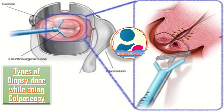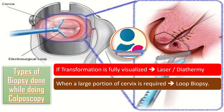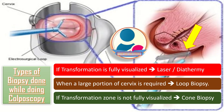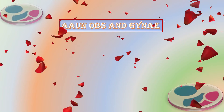If the transformation zone is fully visualized, biopsy of the worst atypical epithelium may be undertaken with an excisional method such as laser or diathermy. When a large portion of the cervix is required for histological examination, loop biopsy is used. If the transformation zone is not fully visualized, punch biopsy is not possible; in such situations, cone biopsy or external diathermy loop is recommended.